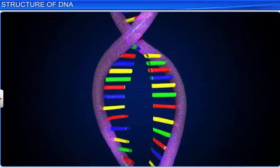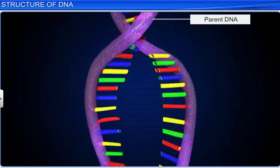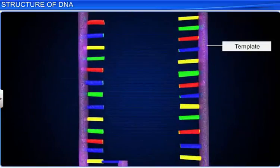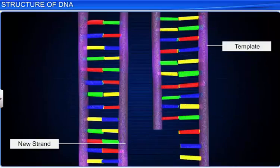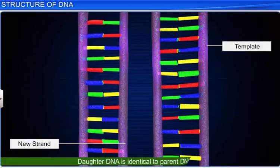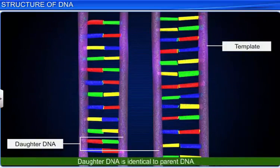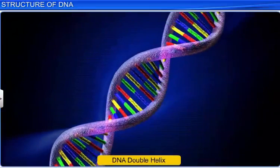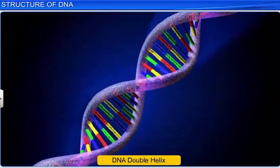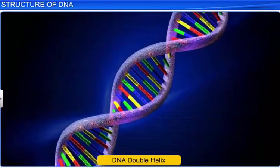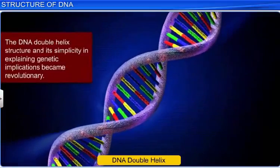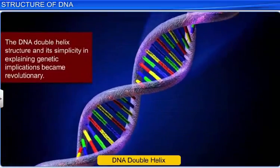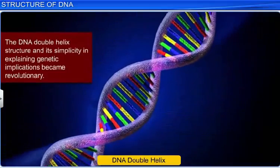Moreover, when two strands of a parental DNA separate, each serves as a template for synthesis of a new daughter strand because of complementary base pairing. And the two double-stranded daughter DNA generated are identical to the parent DNA molecule. Thus, these discoveries provided a clearer picture to the genetic implications of the DNA structure, and soon the DNA double helix structure and its simplicity in explaining genetic implications became revolutionary.